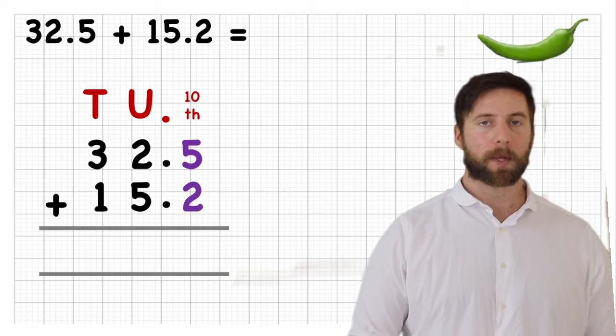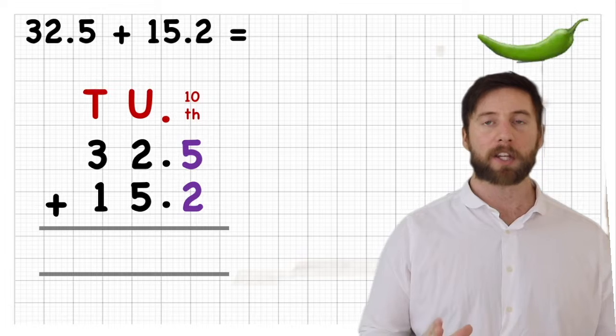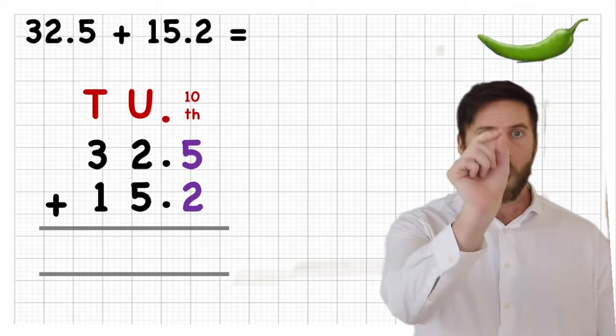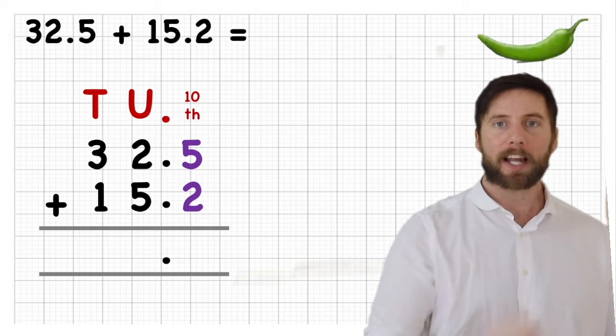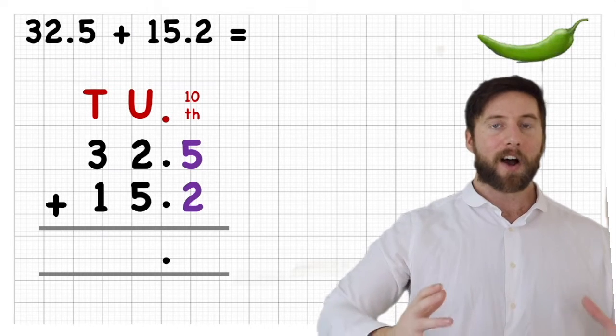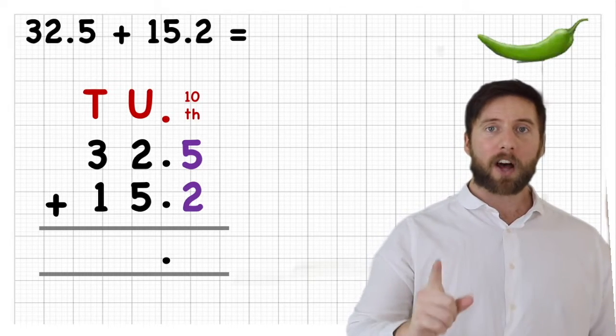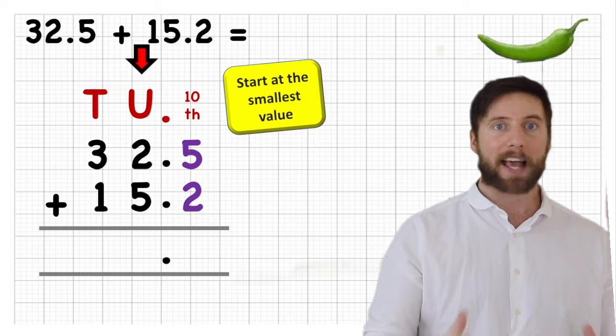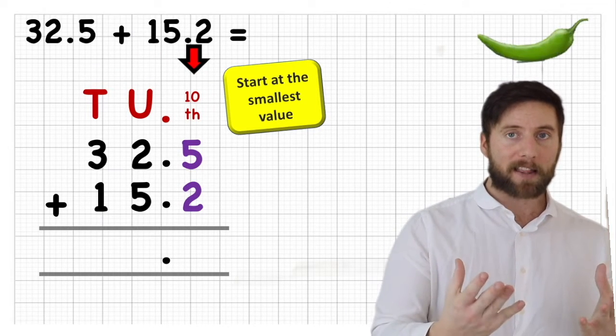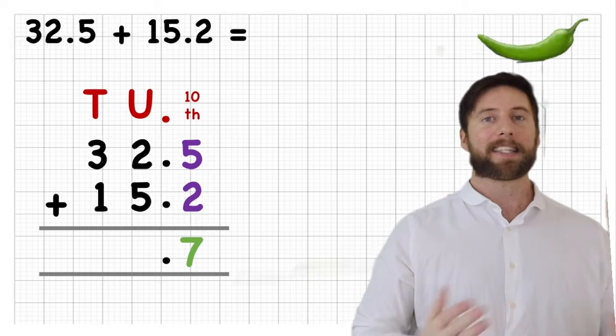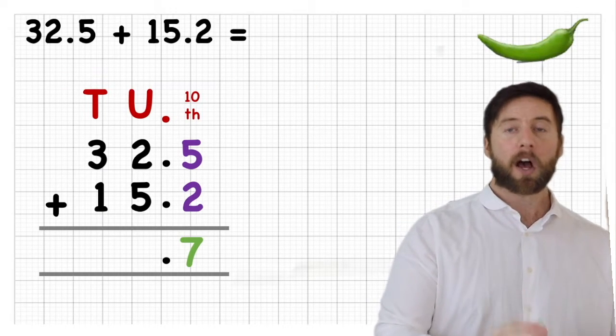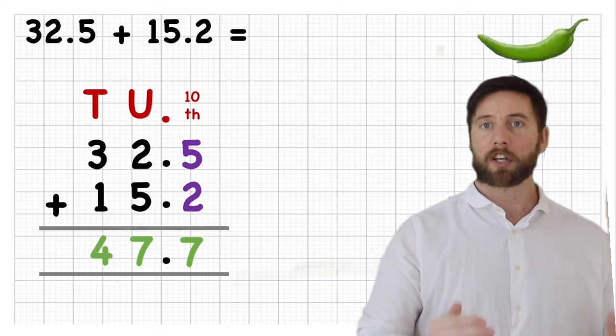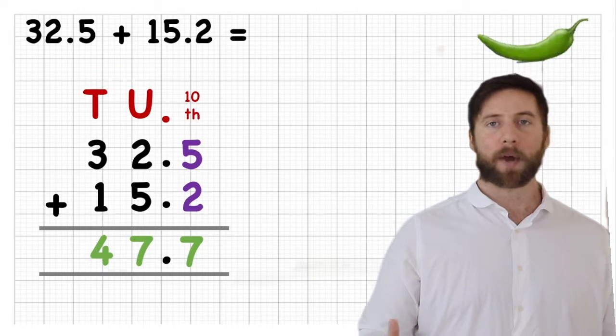Now I want to share another good tip with you because another small mistake that I've seen hundreds of times is when people forget to put the decimal point in their answer. So I suggest at this point, we know where it's going to be. It's going to carry on that same column. So let's put the decimal point in now before we start. Now we always start at our smallest value, which in this case is the tenths column. So I've got five tenths added two tenths leaves me seven tenths. Then in my units column, I've got two add five, again gives me seven. And in my tens column, I've got three and a one, which gives me four. My answer is 47.7.